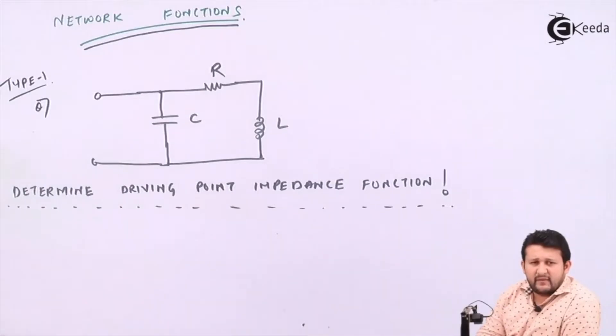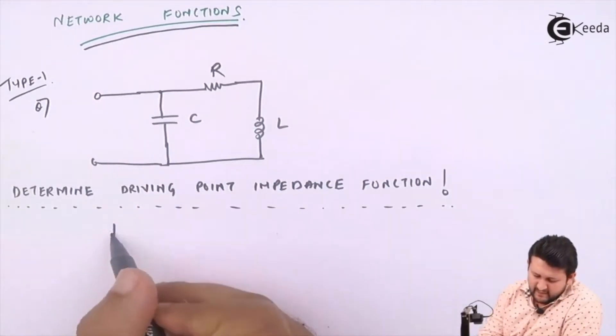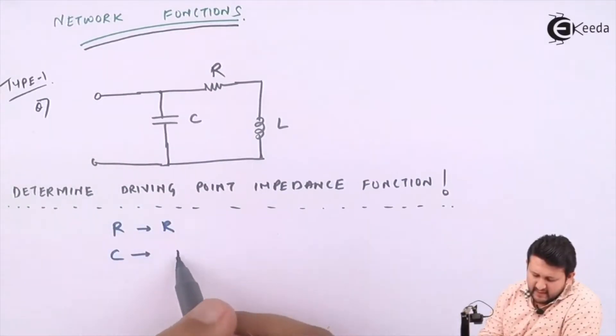Before that, I need to convert all the parameters into the frequency domain using Laplace. For R, C, and L: R will be as it is, C will be 1 upon Cs which we've seen in Laplace, and L is Ls, which we've also seen in Laplace.